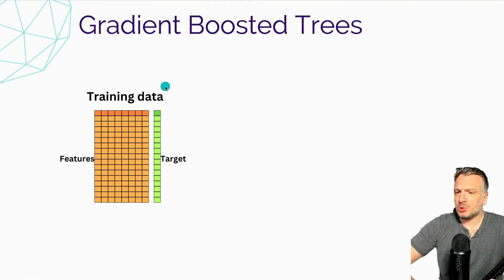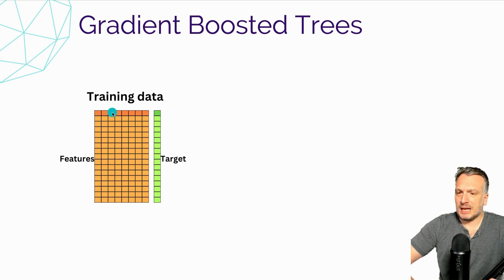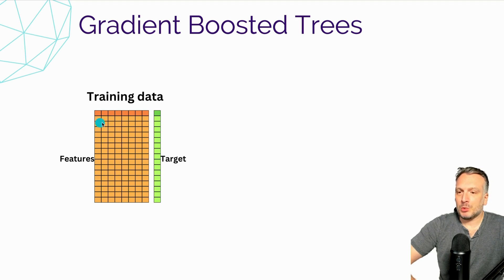Let's imagine that we have training data. We have some features and we have a target. Think about this as tabular data — we have some columns and each sample is represented by a row of features. Each row is associated to its target.